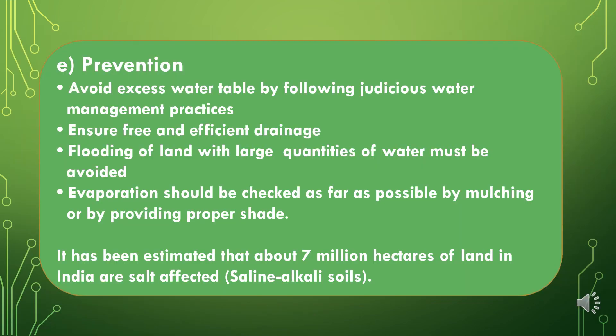Fifth method of reclamation is prevention. We must avoid excess water table by following judicious water management practices, ensuring free and efficient drainage. Flooding of land with large quantities of water must be avoided. Evaporation should be checked as far as possible by mulching or by providing proper shade. It has been estimated that about 7 million hectares of land in India are salt affected, comprising saline and alkali soils.